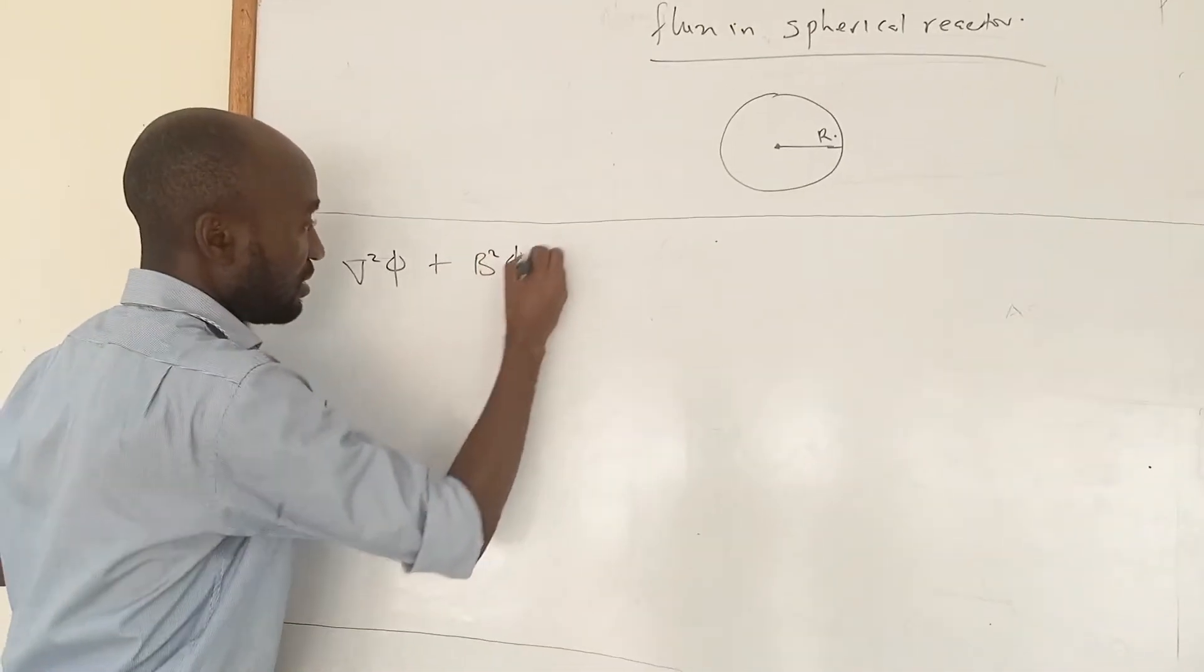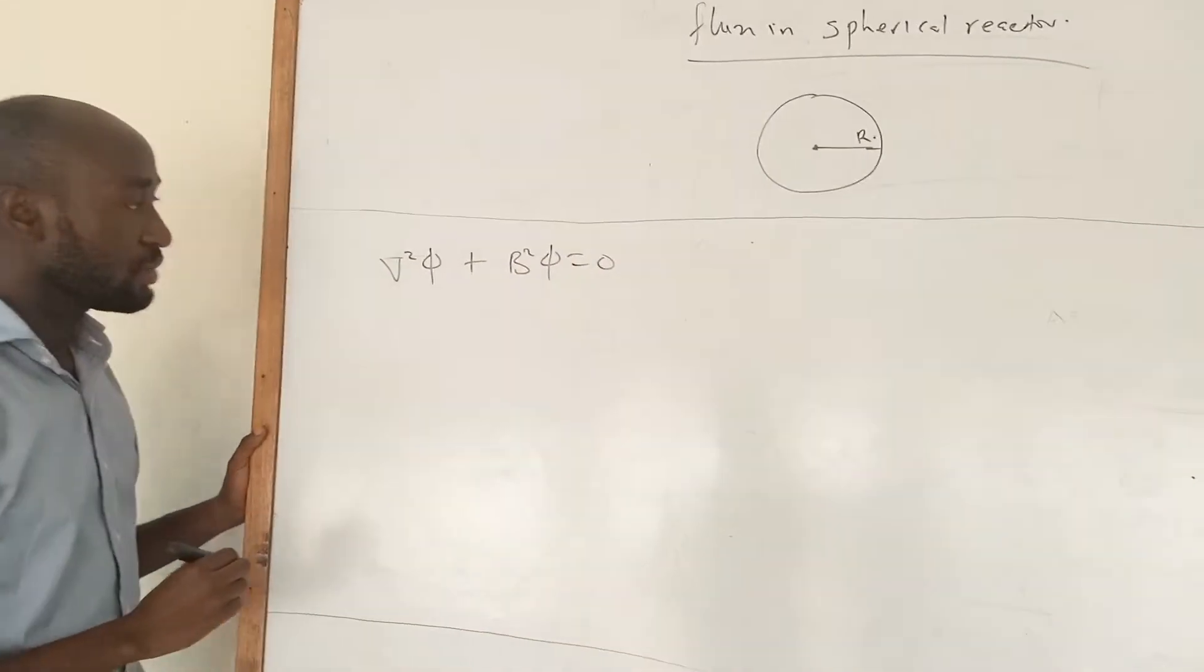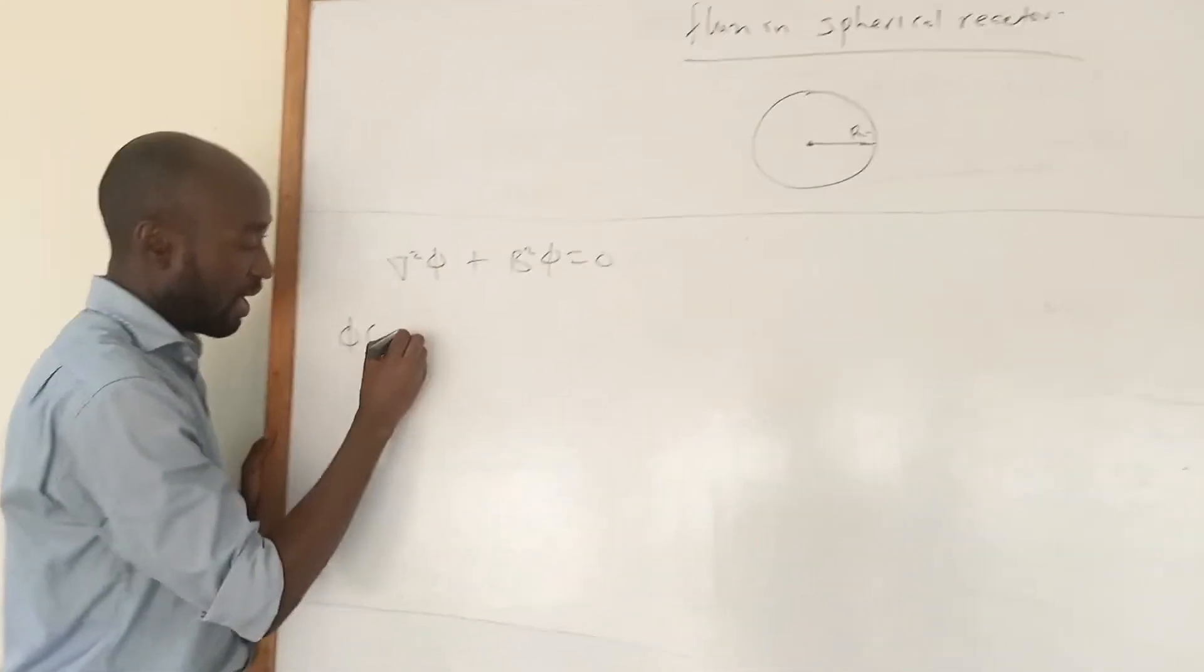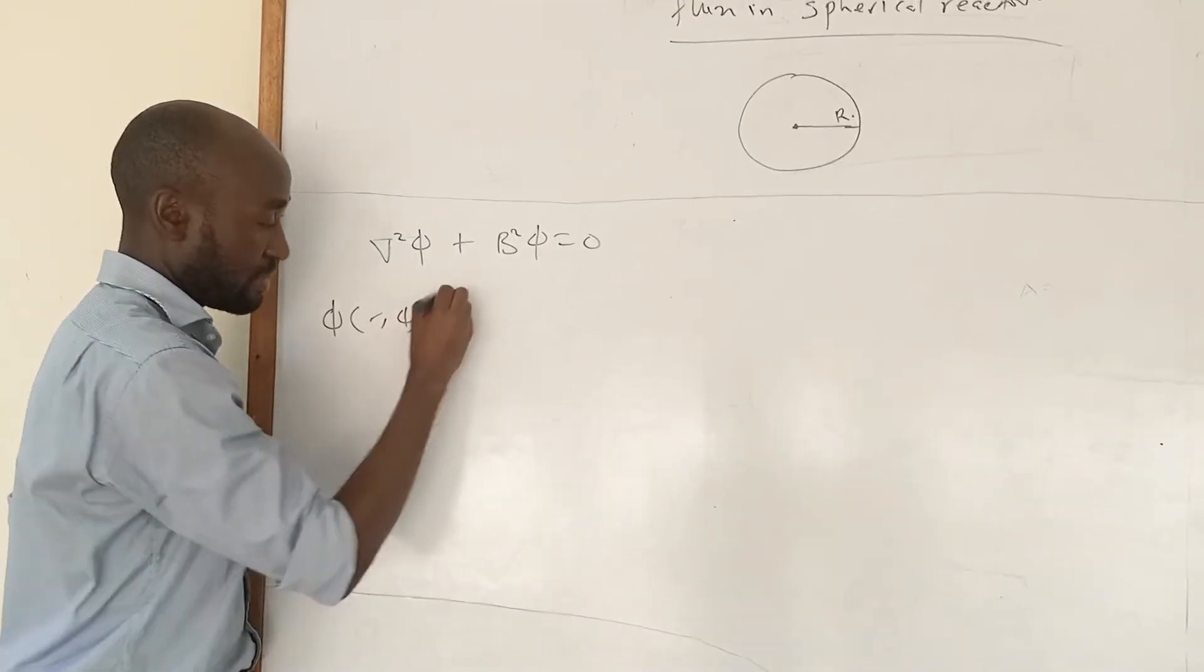The one group reactor theory diffusion equation is ∇²φ + B²φ = 0 in the spherical reactor. Phi will be a function of R, phi, and psi.